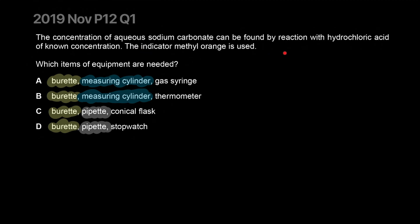Concentration of aqueous sodium carbonate can be found by reaction with hydrochloric acid of known concentration. An indicator is used - so you're doing a neutralization reaction. You'll keep adding acid to the carbonate until the indicator changes color, which highlights that the acid is in surplus.